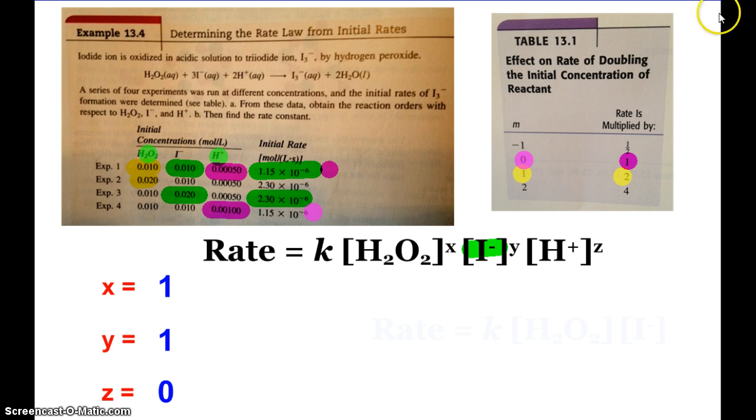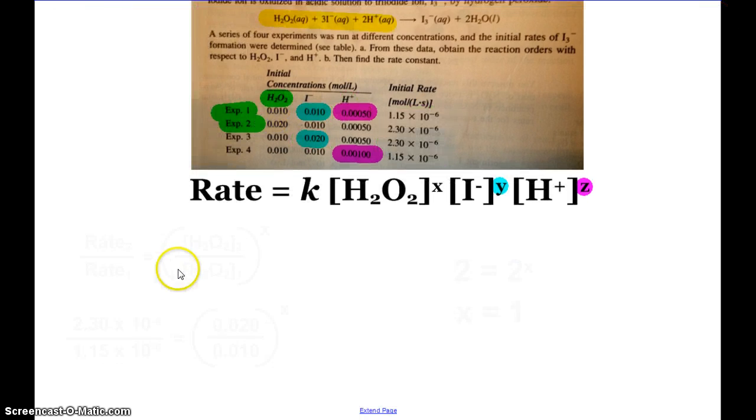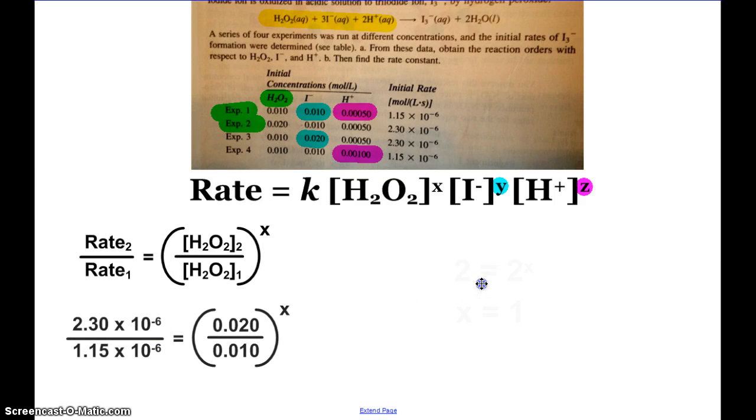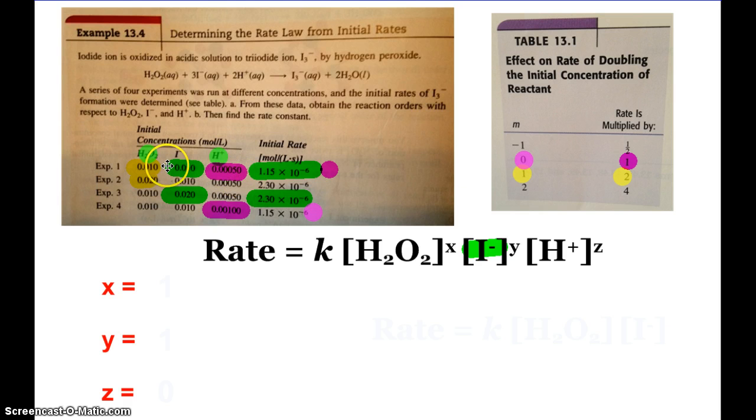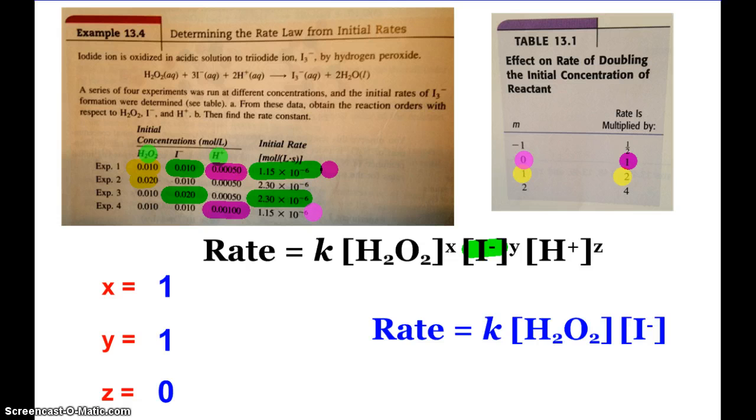This little table is the shortcut version of what we did when we actually went through and did all the math. You can do the math, but you can also just look at when I double the concentration. If the rate is doubled, it's a power of 1. If I double the concentration and the rate is quadrupled, it's a power of 2. If I double the concentration and the rate doesn't change, then it's a power of 0. Because we found 1, 1, 0, this ends up being my rate law for this example.